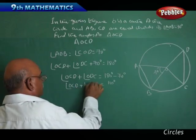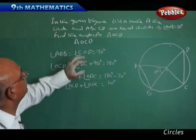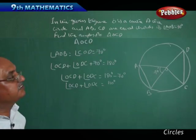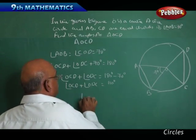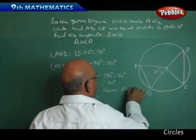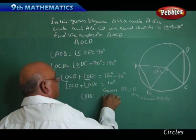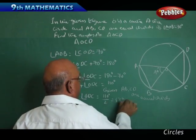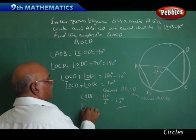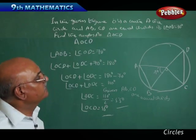Angle OCD plus angle ODC is equal to 110 degrees. Now, our main logic is: AB and CD are equal chords, as given. Whenever they are equal chords, naturally they should make equal angles. Therefore, angle ODC equals angle OCD. Given that AB and CD are equal chords, angle ODC equals 110 degrees divided by 2, which is equal to 55 degrees. Naturally, since one is 55 degrees, the other is also 55 degrees — angle OCD is also equal to 55 degrees. In that way, we can find out the angles of triangle OCD.